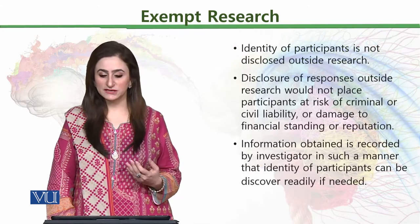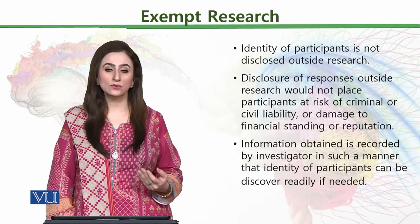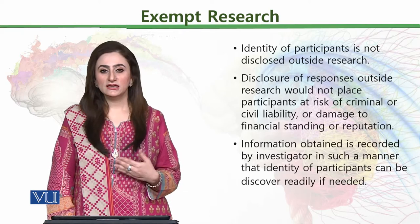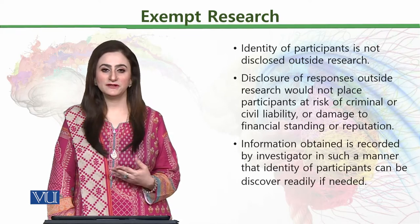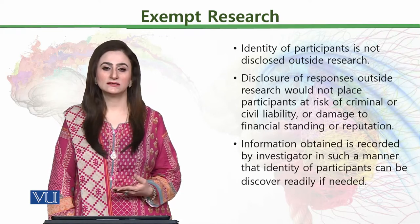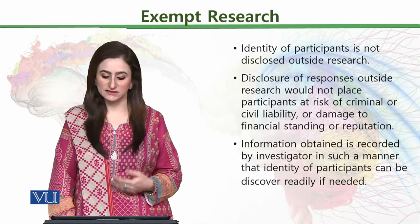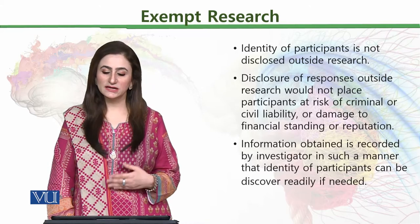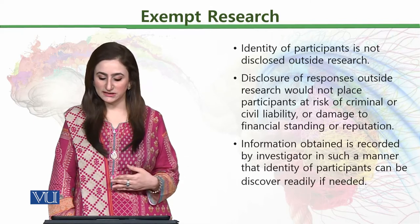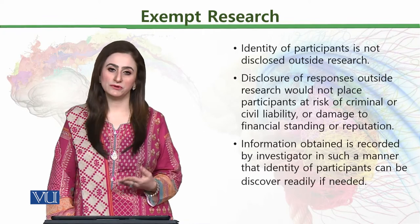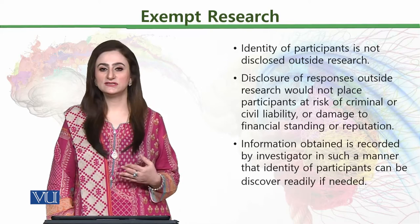This exemption applies if at least one of three criteria are met. The first is that the identity of participants is not disclosed outside the research — for example, if you have conducted an anonymous survey or the feedback is not made public with names attached. The second is that disclosure of responses outside research would not place the participant at risk of criminal or civil liability or damage to financial standing or reputation.